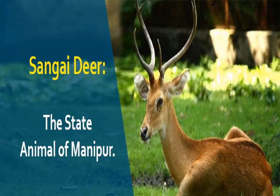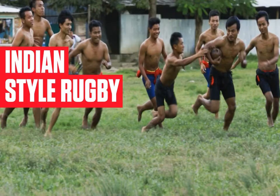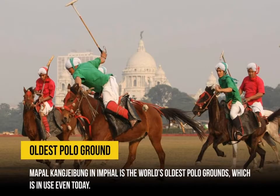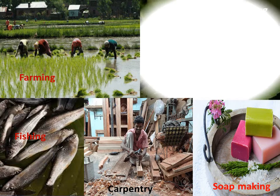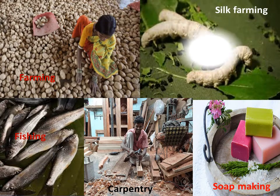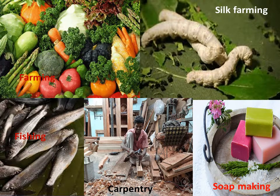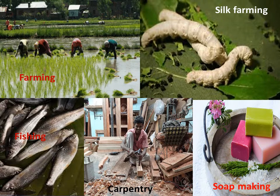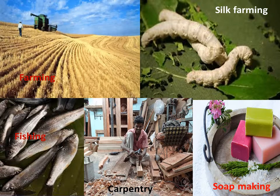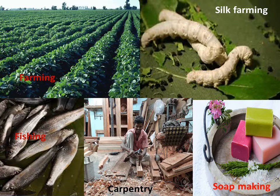Manipur has an ancient tradition of many interesting local games. Two of these are Manipuri rugby, which uses a coconut as a ball, and Manipuri polo, that uses a ball made out of bamboo roots. Farming, fishing, silk farming, carpentry, and soap making are all important occupations of Manipur.